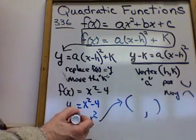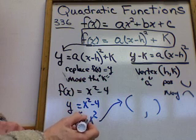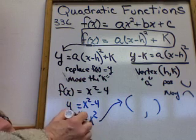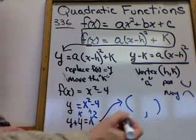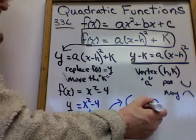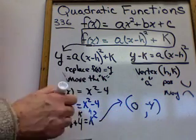We have a k. In this case it's 4. And the h, there's nothing with the x, so it's 0. So it's 0, negative 4 is the vertex for that graph.